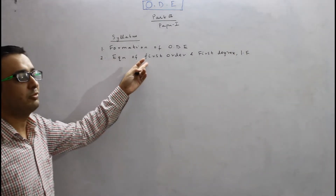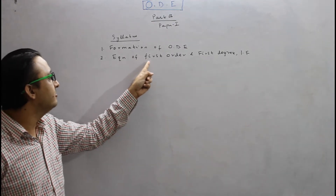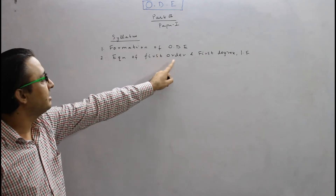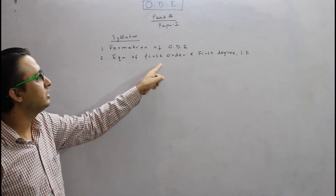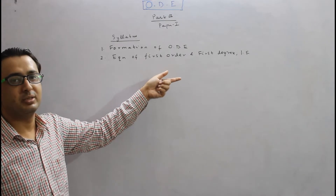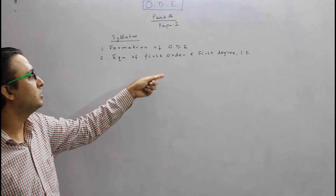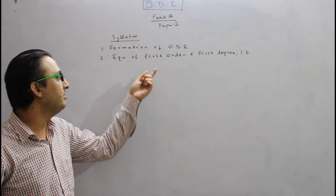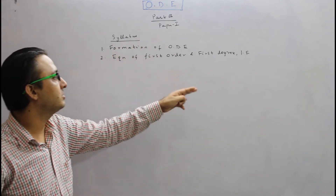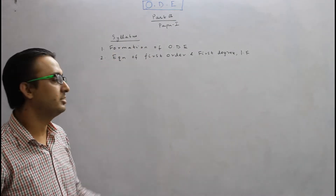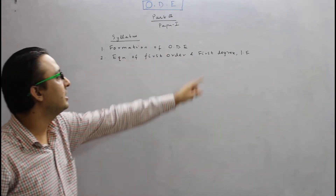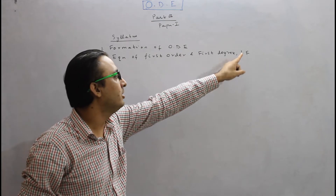There are a lot of variety of questions in this part. We have separable variables, and we also have to reduce to separable variables. Then another type is homogeneous equations, and we can also reduce to homogeneous equations. Then we have linear equations, and finally Bernoulli equations. There are a lot of variety of methods to solve in this area of equations of first order and first degree.